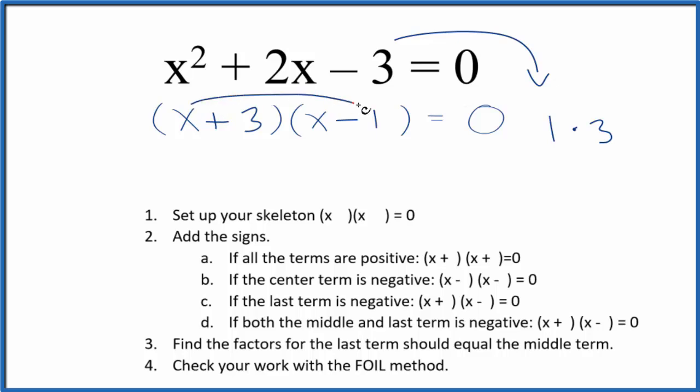So now I'd have the x times the negative 1 and the 3 times x. 3x plus negative x, that's 2x. So these are correct.